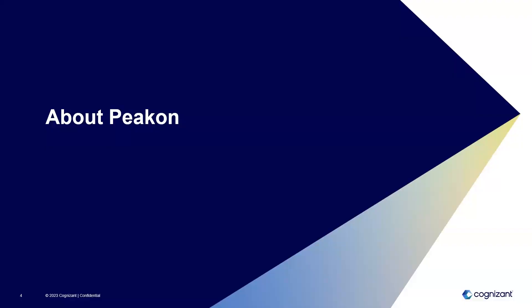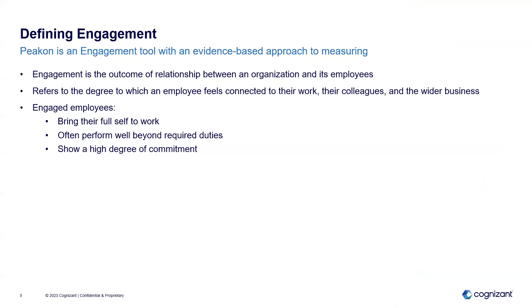Some of you may be familiar with PECON, but to make sure we're all on the same page, I'll start with defining engagement. Before you choose your engagement tool or survey on engagement, it's really important to understand what this concept means. PECON defines engagement as the outcome of the relationship between an organization and its employees. Engagement reflects how connected employees feel to their work, their colleagues, and the wider business. Engaged employees feel more comfortable at work, tend to perform better, and show higher commitment to their organization, so it's important to have a valid and continuously updated measurement of this.